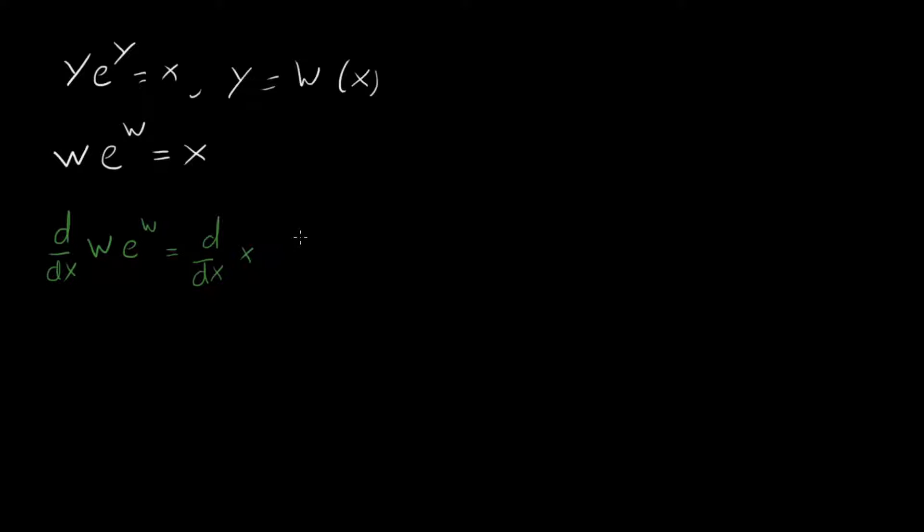We do d/dx of w e^w and then d/dx of x. Right, the right hand side is easy. That's one. What about the left hand side? We have a little product rule to do. So we're going to have w' e^w plus w e^w times w'. So e^w stays the same, but then we drop down w' from the chain rule. And that's equal to one.